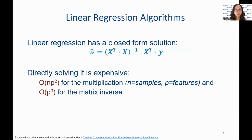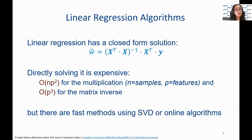We will also review Big O notation, which is a mathematical notation used to describe the growth rate of an algorithm's time or space complexity as the size of its input increases. It provides an upper bound on the growth rate of the running time or memory usage of an algorithm, allowing us to compare the efficiency of different algorithms. Note that linear regression is expensive, where O(NP²) is for multiplication, and O(P³) is for matrix inverse within the calculation of the model weights W. But there are also fast methods, such as using SPD or other online algorithms.